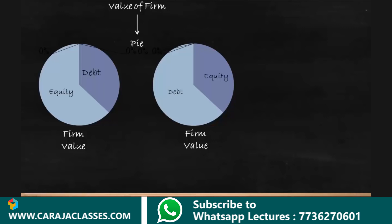The fundamental substance of the MM approach is that the value of a levered firm equals the value of an unlevered firm. A levered firm has a debt mix, whereas an unlevered firm has only equity. If the value of a levered firm is higher than the unlevered firm or vice versa, it will be compensated by an arbitrage process, so no firm can sustain a higher or lower value — it reaches balance through arbitrage.